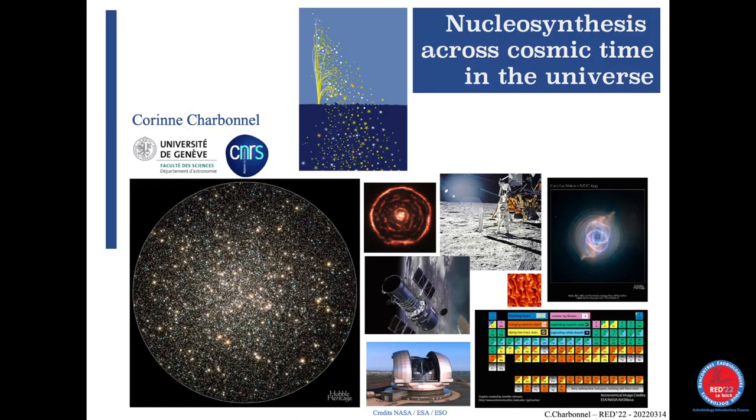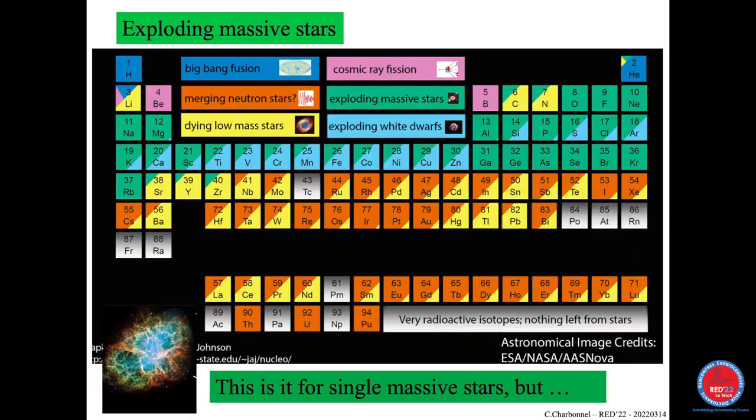We looked at low-mass stars and you understood that when they burn helium at the center they make carbon and oxygen that they will precisely keep in the white dwarf. So this is not the carbon and oxygen that will go into the interstellar matter, but the one which will go into the interstellar matter is produced during the thermal pulses through helium burning in the shell, which is then dredged up by the convective envelope, brought to the envelope, and then expelled by the winds.